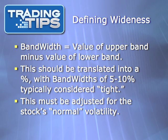But the question remains: how tight do the bands have to be in order for it to be significant? Band Width is technically defined as the value of the upper band minus the value of the lower band. However, this is all relative. A value of 5 on a $100 stock would not mean the same thing as 5 on a $20 stock. To help standardize values, you should think of Bollinger Band Width in terms of percentage, with bandwidths of 10% or less typically considered tight.